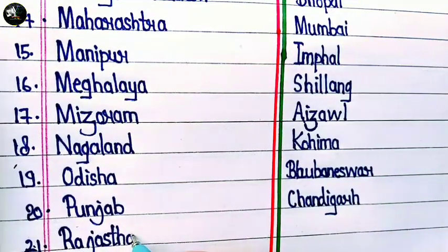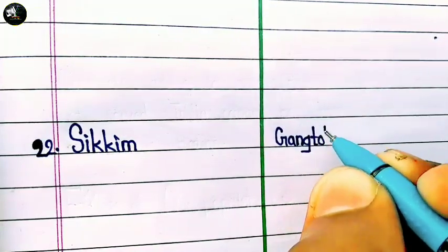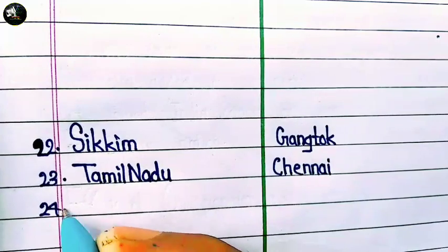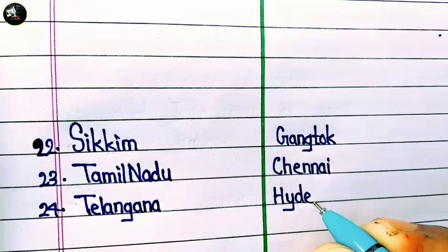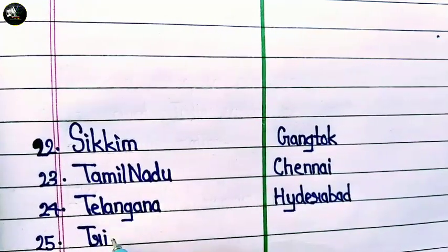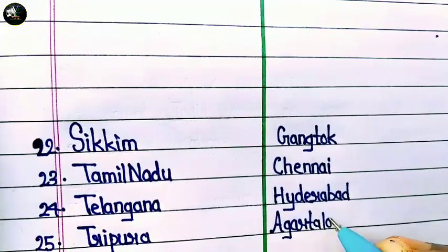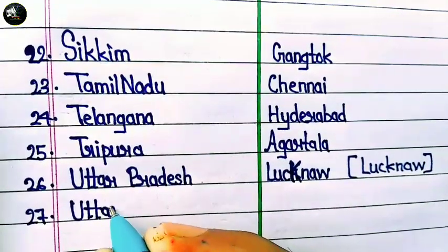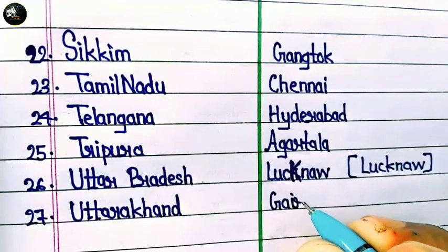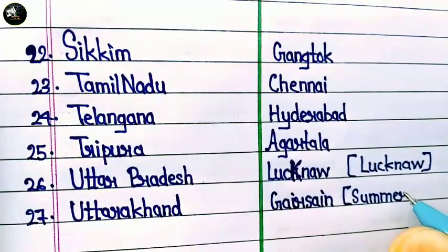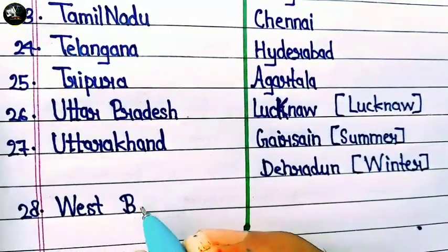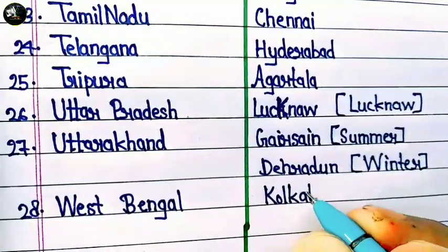Then Punjab and their capital is Chandigarh — both Haryana and Punjab share Chandigarh as capital. Next is Rajasthan and their capital is Jaipur. Sikkim and their capital is Gangtok. Next is Tamil Nadu and their capital is Chennai. Telangana and their capital is Hyderabad. Next is Tripura and their capital is Agartala. Next is Uttar Pradesh and their capital is Lucknow. And then Uttarakhand and their capital is Gairsain in Summer and Dehradun in Winter. And the last state is West Bengal and their capital is Kolkata.